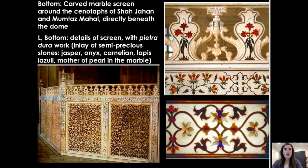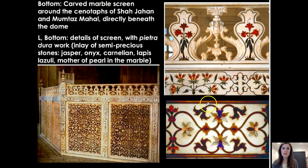There is a cenotaph in the main floor directly below the dome — two of them, which are the symbolic burial spaces for Mumtaz Mahal and Shah Jahan. Mumtaz's site is slightly smaller but directly below the dome, whereas Shah Jahan's is slightly off to the side. There's a beautiful screen surrounding the cenotaphs that includes Pietra Dura — meaning Italian hard stone — which is this kind of cut stone often used in tabletops and decorative arts, inlaid into the screen. The stones include jasper, onyx, carnelian, lapis lazuli, and mother of pearl in the marble. Unfortunately, during the colonial period people came and carved out some of the precious stones from this structure.